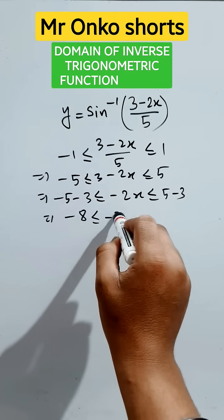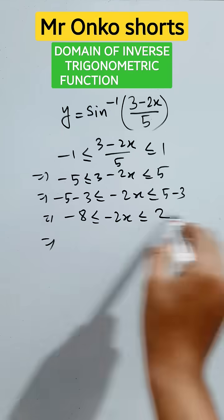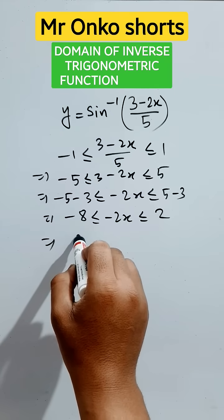We get minus eight less than or equals to minus two x less than or equals to two. Divide both sides by minus two, that will be positive four.